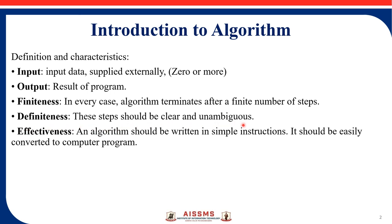Definiteness means the steps should be clear and unambiguous — they should not be repeated again and again, and should be understandable by any third user. Effectiveness is another characteristic of an algorithm: the algorithm should be written in simple instructions that can be easily converted to a computer program and are understandable by the user.